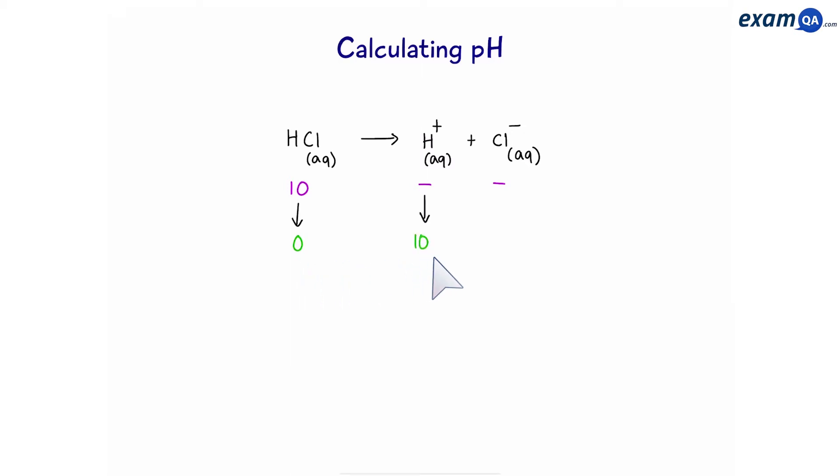And now we have 10 hydrogen ions and 10 chloride ions floating in the solution. Now you might think, hold on, how come you have 10 and 10? Shouldn't it be 5 and 5?